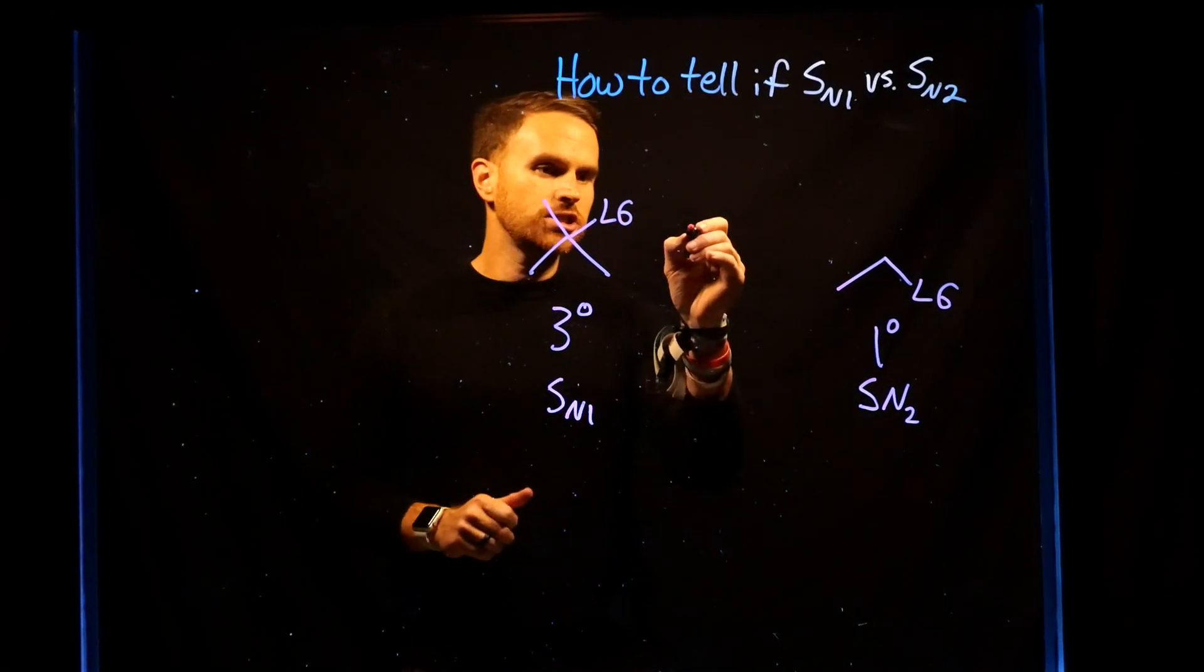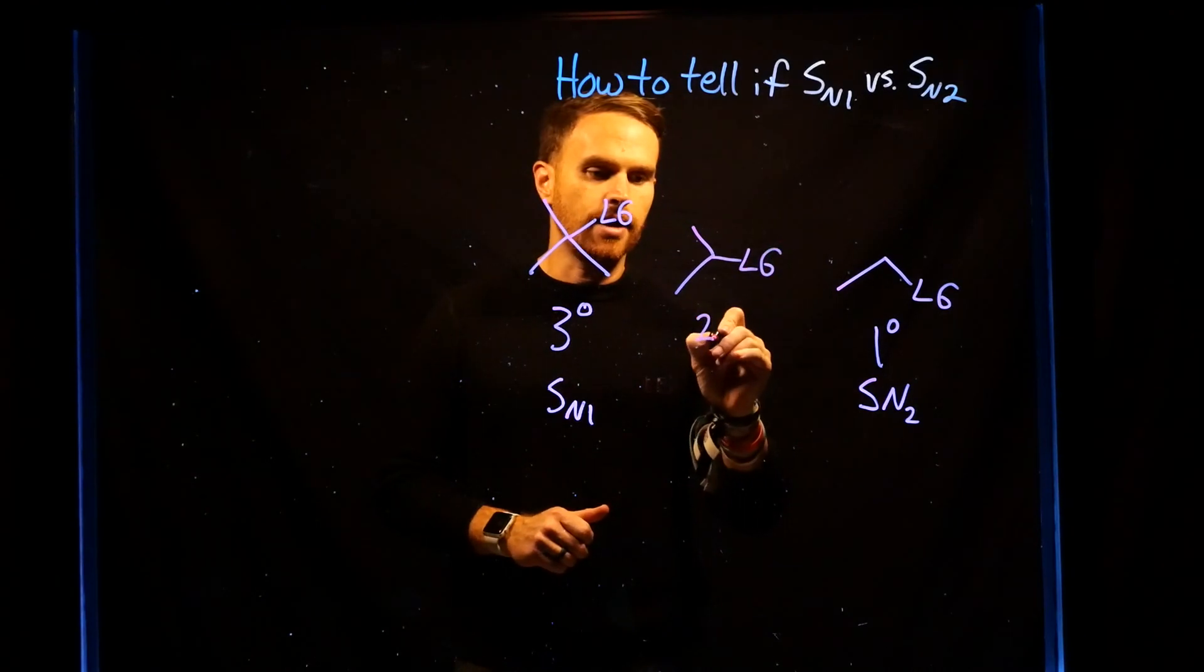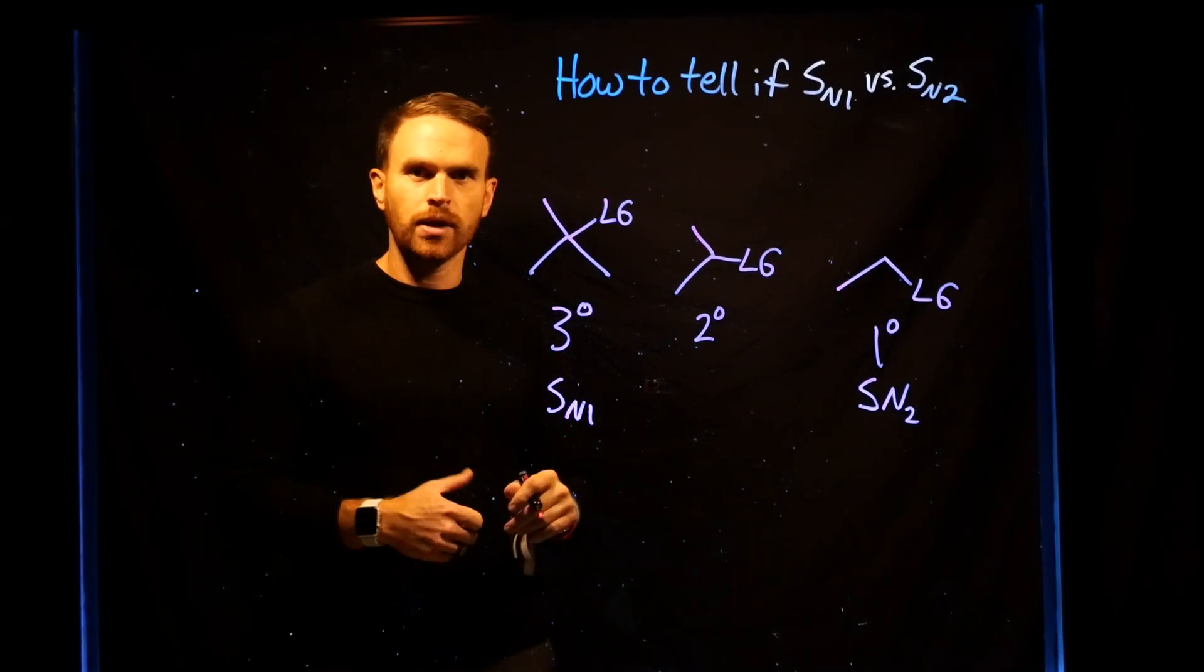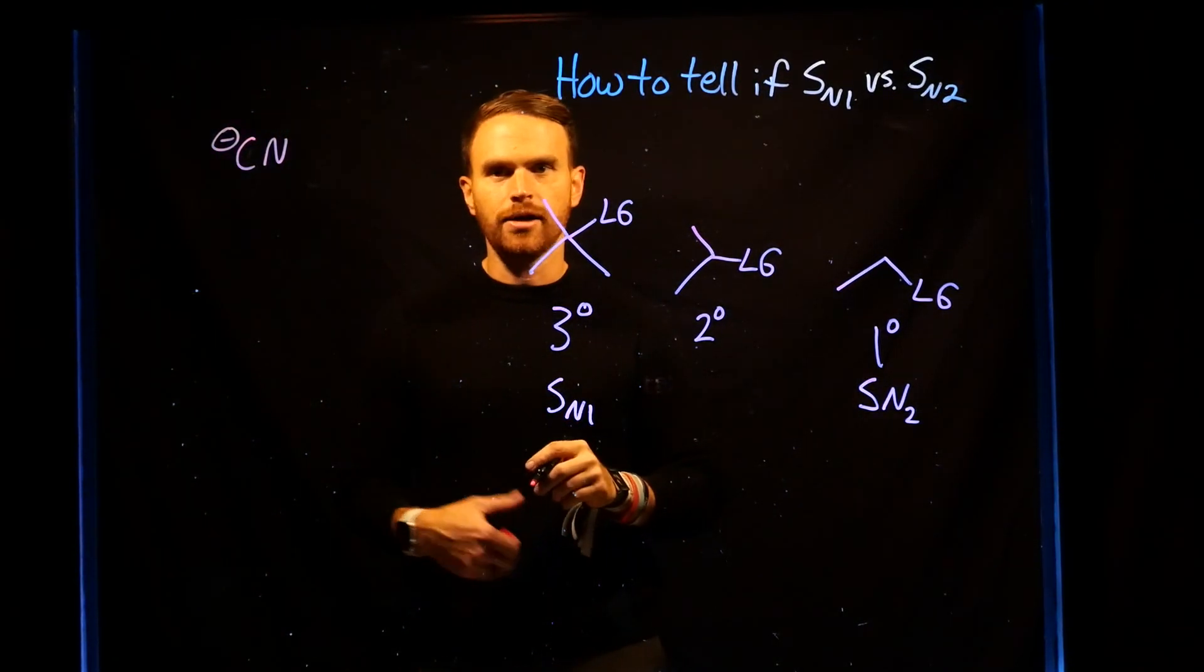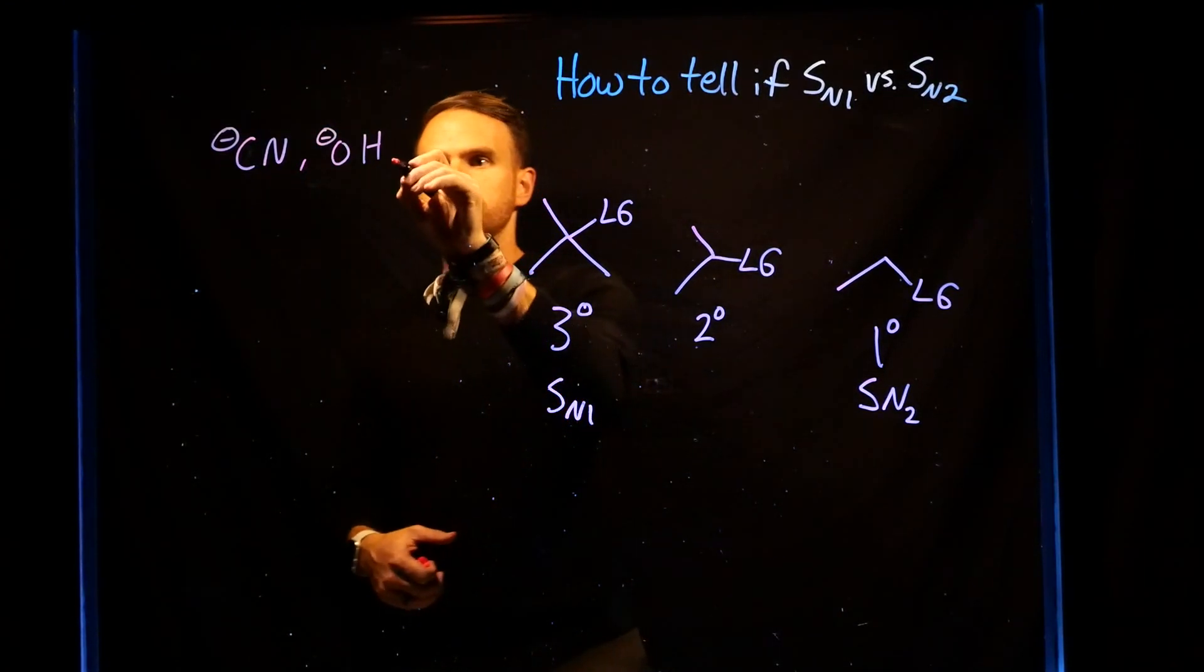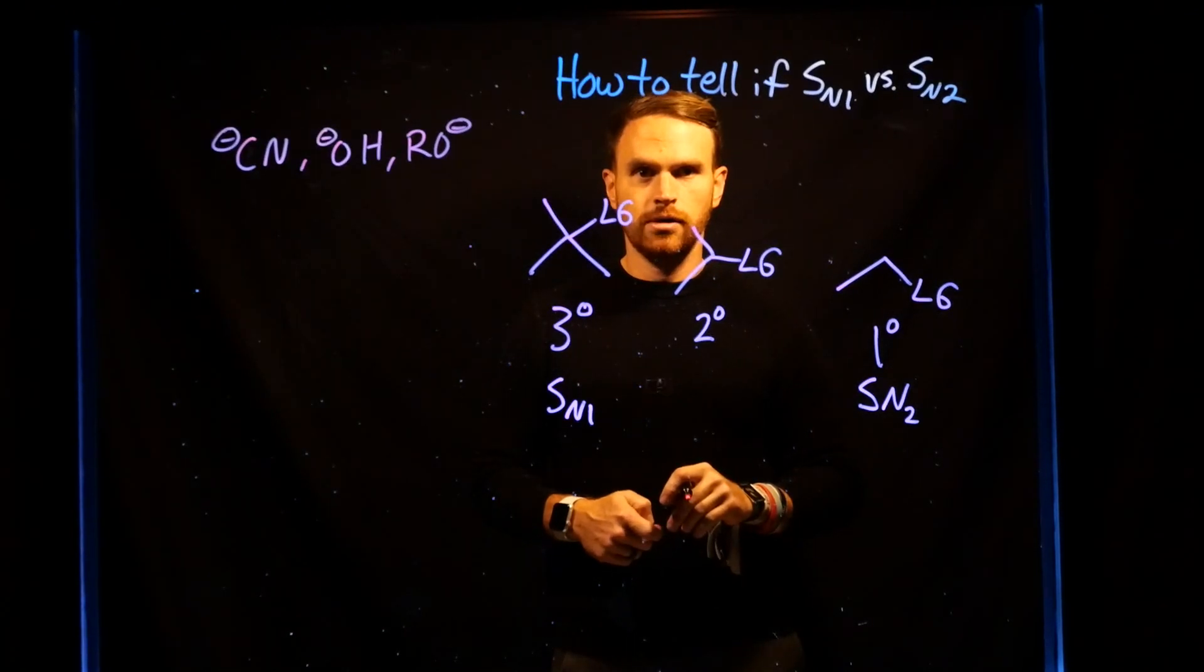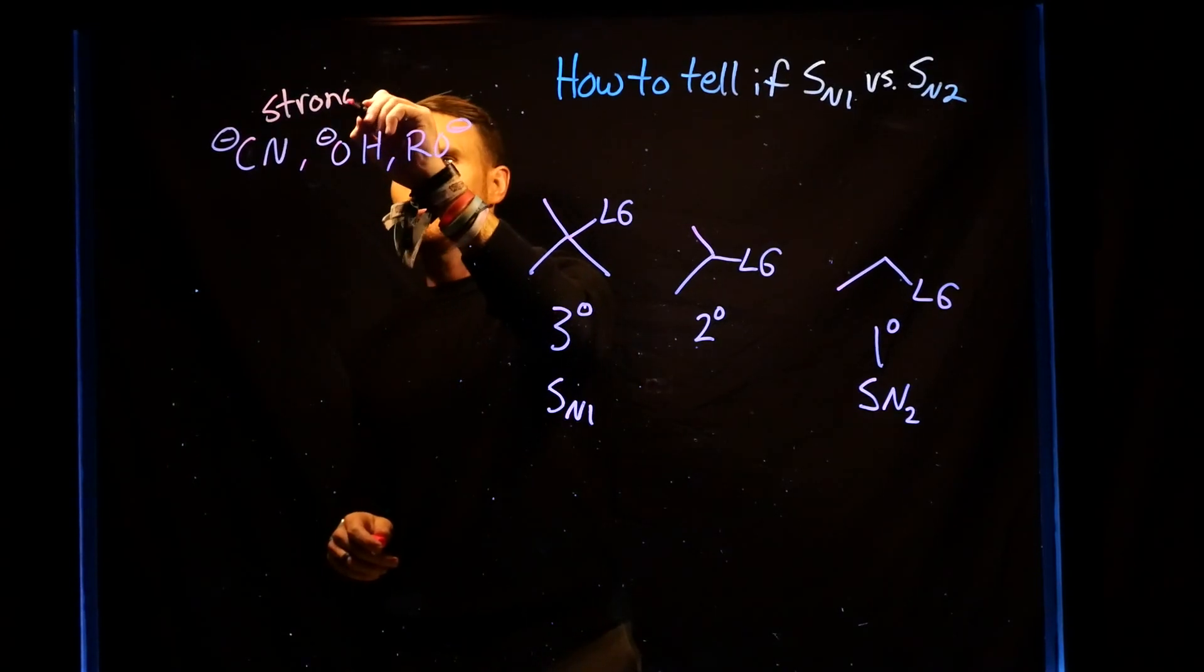Now the question arises, which mechanism would follow if you had a secondary carbocation? For this, we need to recall whether or not something is a strong or weak nucleophile. Strong nucleophiles tend to have negative charges. Something like CN minus or cyanide, something like OH minus or hydroxide, something like a group that has a negative charge. These types of nucleophiles are going to be strong nucleophiles.